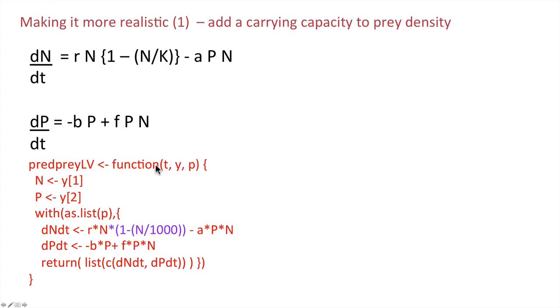What it would entail is a simple change to our individual function here. Now, of course I could define a parameter and call it k in here but for simplicity I'm just simply putting n upon a thousand so I don't need to define it, that's our value of k that we've got.